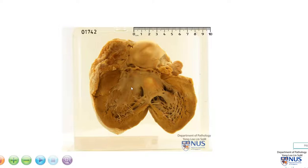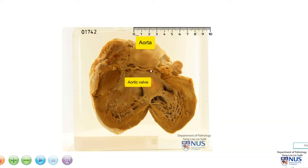Hello, this is a specimen of the heart and we are looking at the left ventricle which has been opened. This is the aorta, this is the aortic valve which is very abnormal, and over here is the region where the mitral valve leaflets are, where they allow blood inflow from the left atrium into the left ventricle.